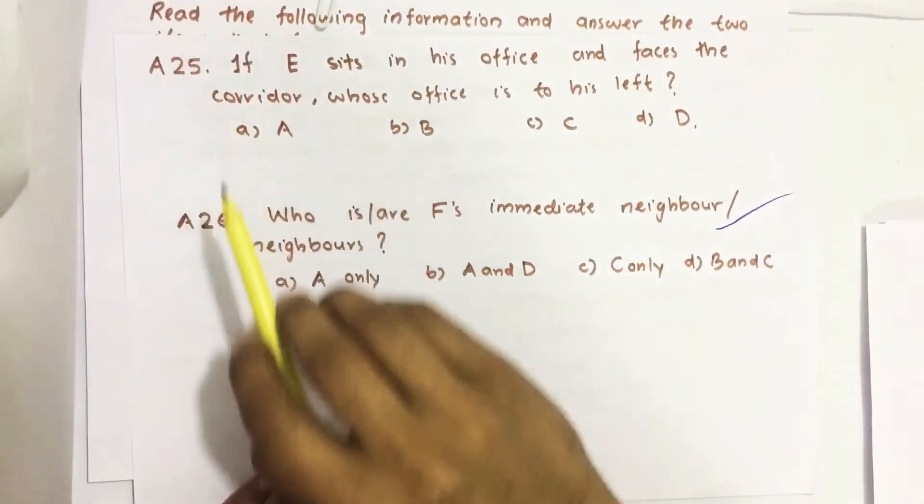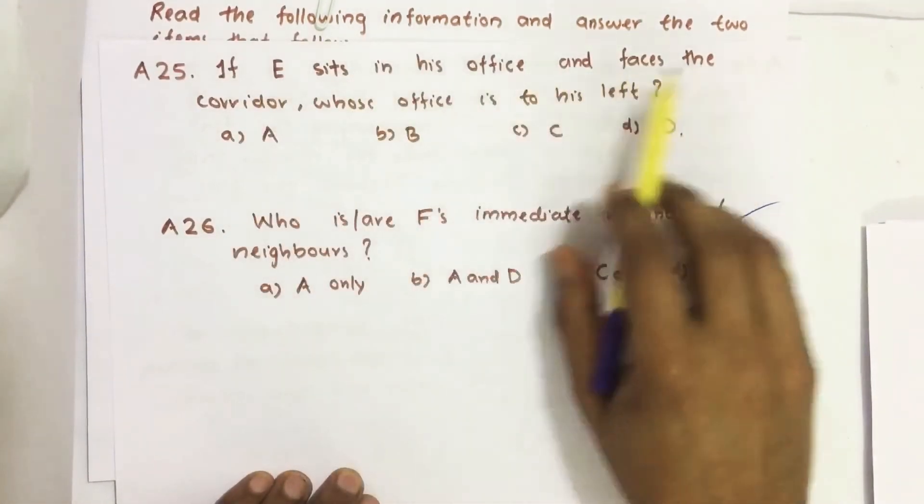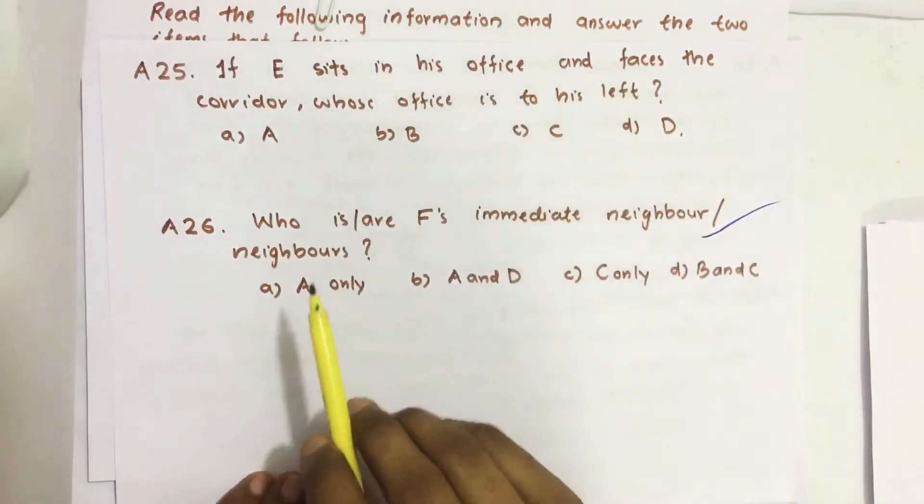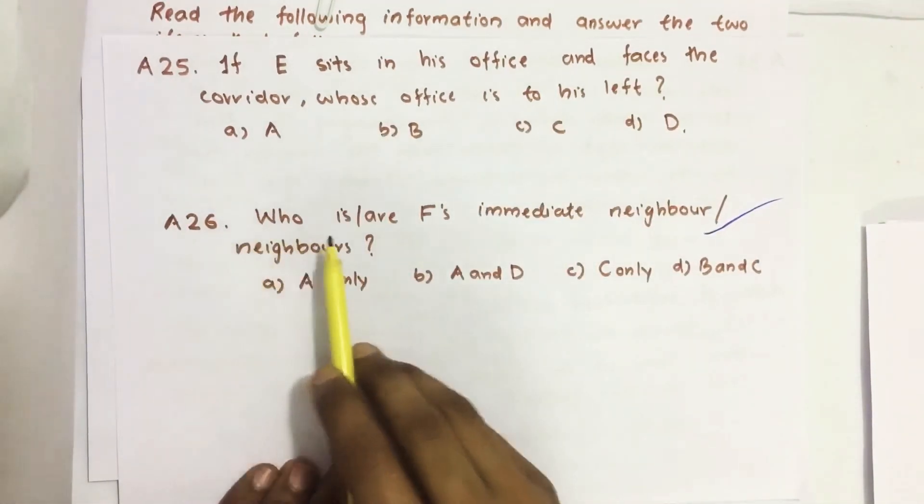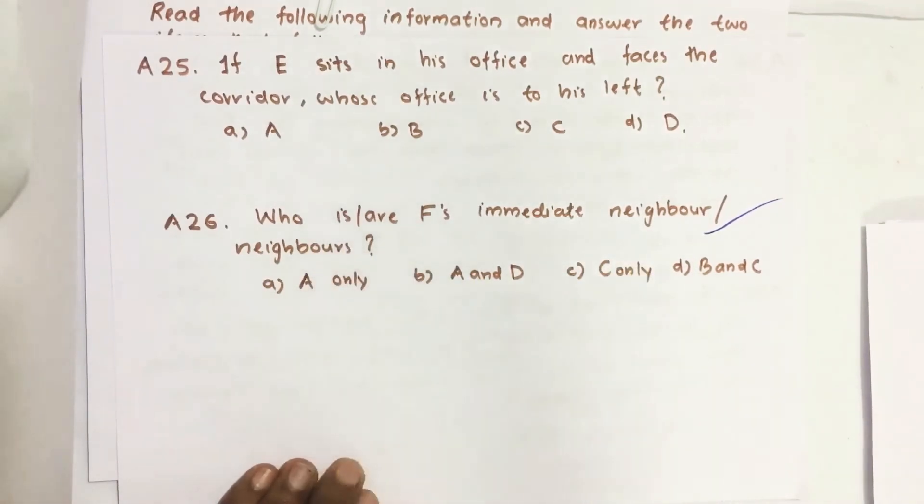Question number 25 and 26. If E sits in his office and faces the corridor, whose office is to his left? Question number 26: Who is or are F's immediate neighbor or neighbors?